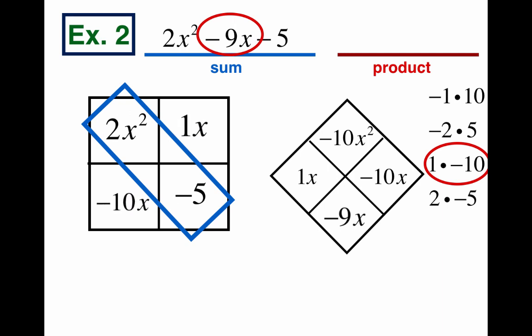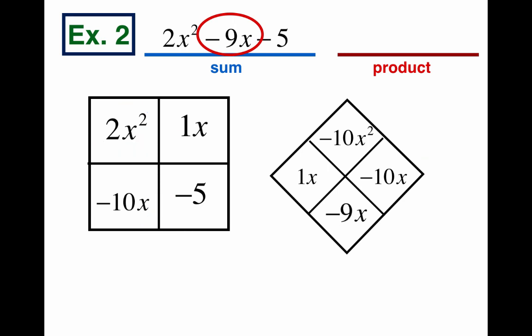And that answer is what goes in our boxes on the rectangle, 1x and negative 10x. And look, Casey's rule works. 1 times negative 10 is negative 10x squared. It matches up. All right, now that we've solved the diamond and the rectangle, we can do the rest of the work, which is the outside part of the rectangle. So x times x is x squared, but we need a 2x squared, don't we? So let's put a 2 on the top one.